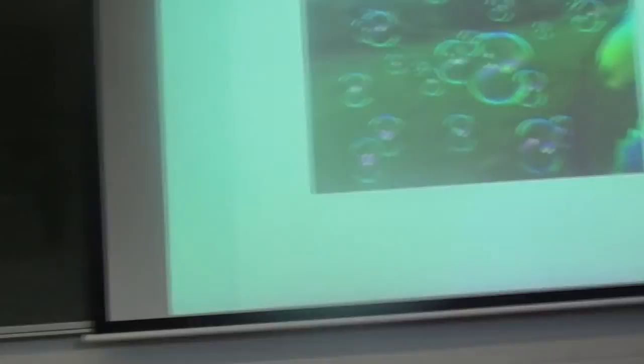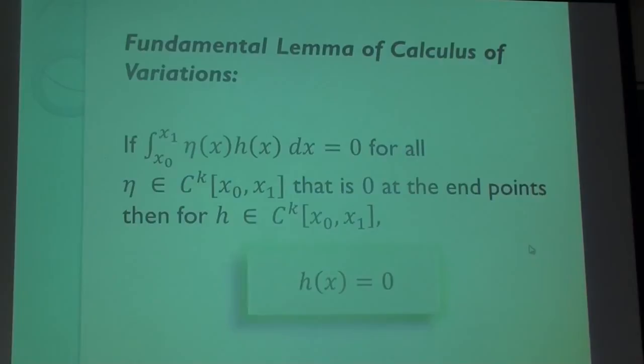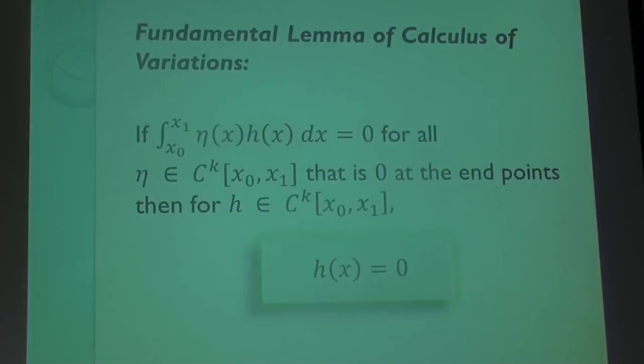At a certain point we will come to how these bubbles are relevant. Before I start the derivation, I want to remind you of the fundamental lemma of calculus of variations, because this is really the key point of how we put this derivation together to actually get to our Euler-Lagrange equation.